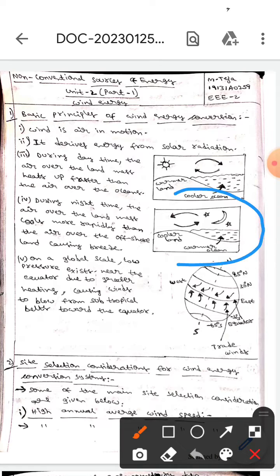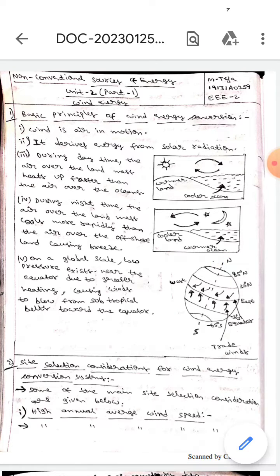Whereas during the nighttime, the air over the landmass cools more rapidly than the air over the offshore land, causing breeze. If you observe here there will be cooler land and warmer ocean during the nighttime.